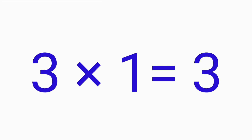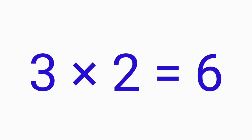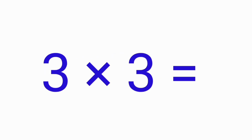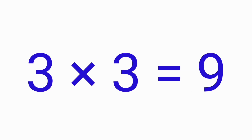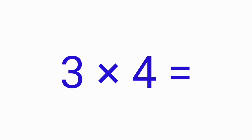Three ones are three. Three twos are six. Three threes are nine. Three fours are twelve.